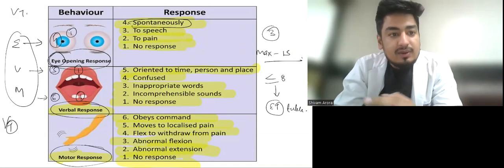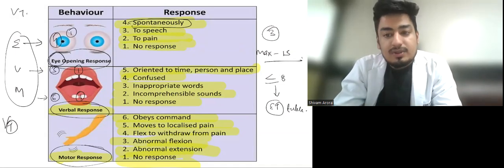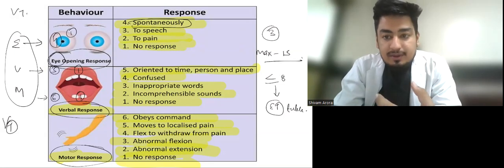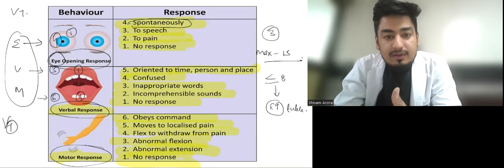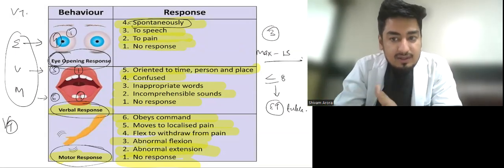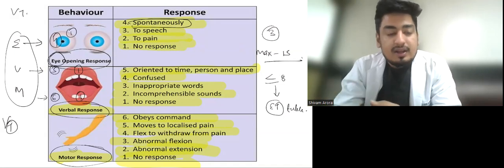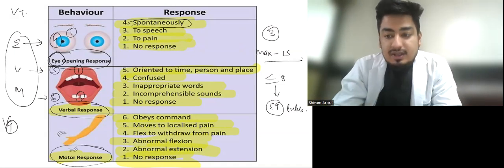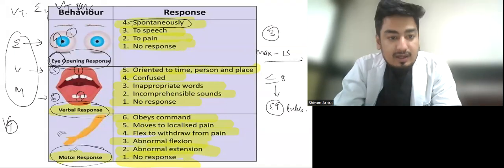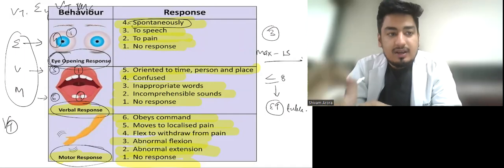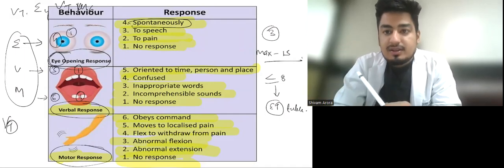Questions can be: how can we assess the response we check in GCS? Eye, verbal, and motor. What is the minimum score? Three. Maximum? Fifteen. They can even ask you to calculate GCS from a scenario and you have to calculate the GCS. For an intubated patient, E response is four, M is six, and patient is intubated so it is VT. Very important table, just learn it by heart. All the best.